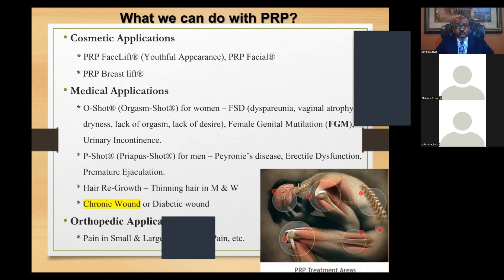PRP has medical applications as well. The O-Shot is for women with female sexual dysfunction — those going through menopause who are in pain and cannot enjoy intimacy as they used to, or who have lack of desire. The O-Shot can restore all those things. In some parts of Nigeria, female genital mutilation is common, and PRP therapy can be used to restore sensation. It is also good for urinary incontinence, and for men — premature ejaculation and erectile dysfunction.